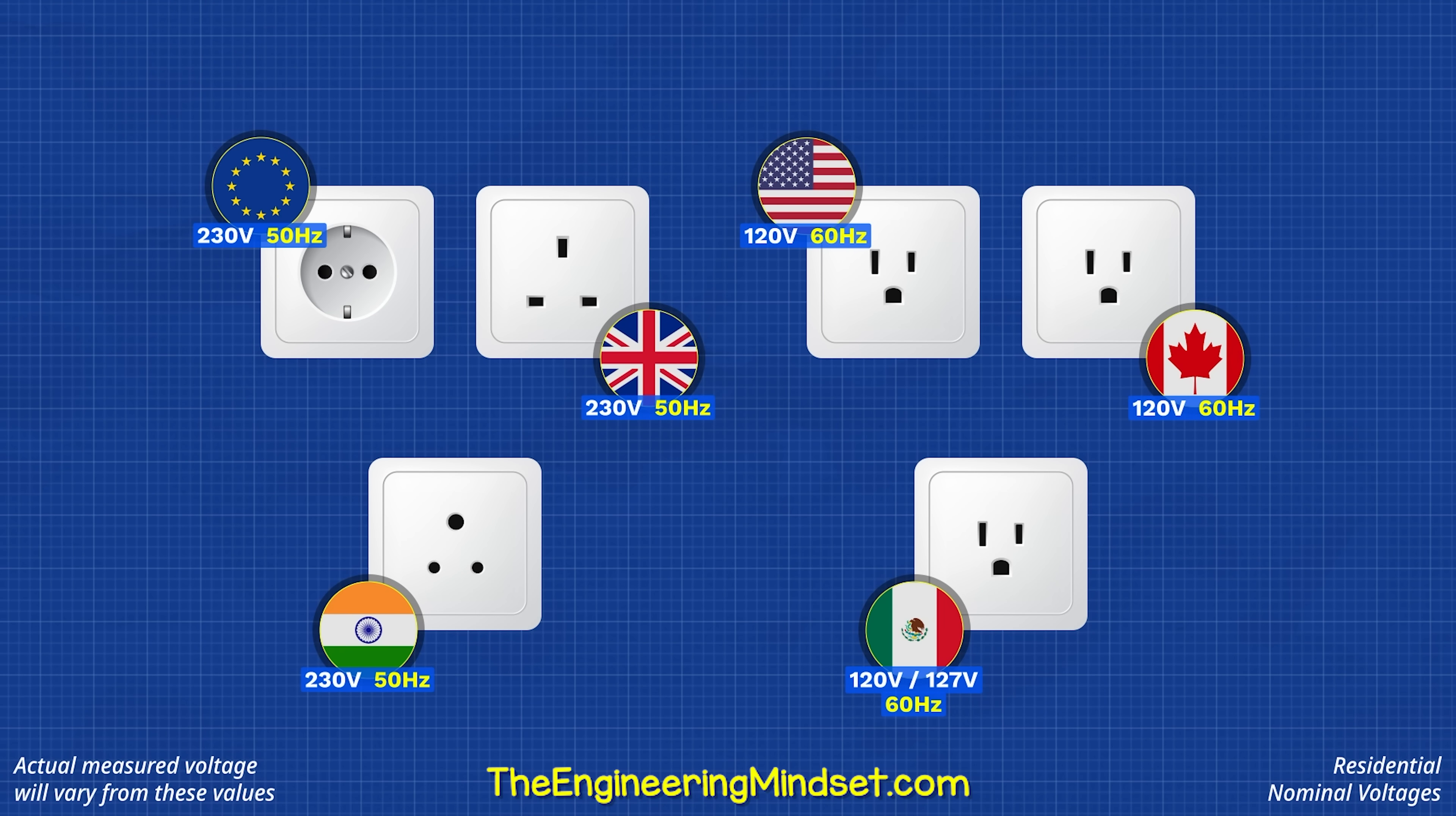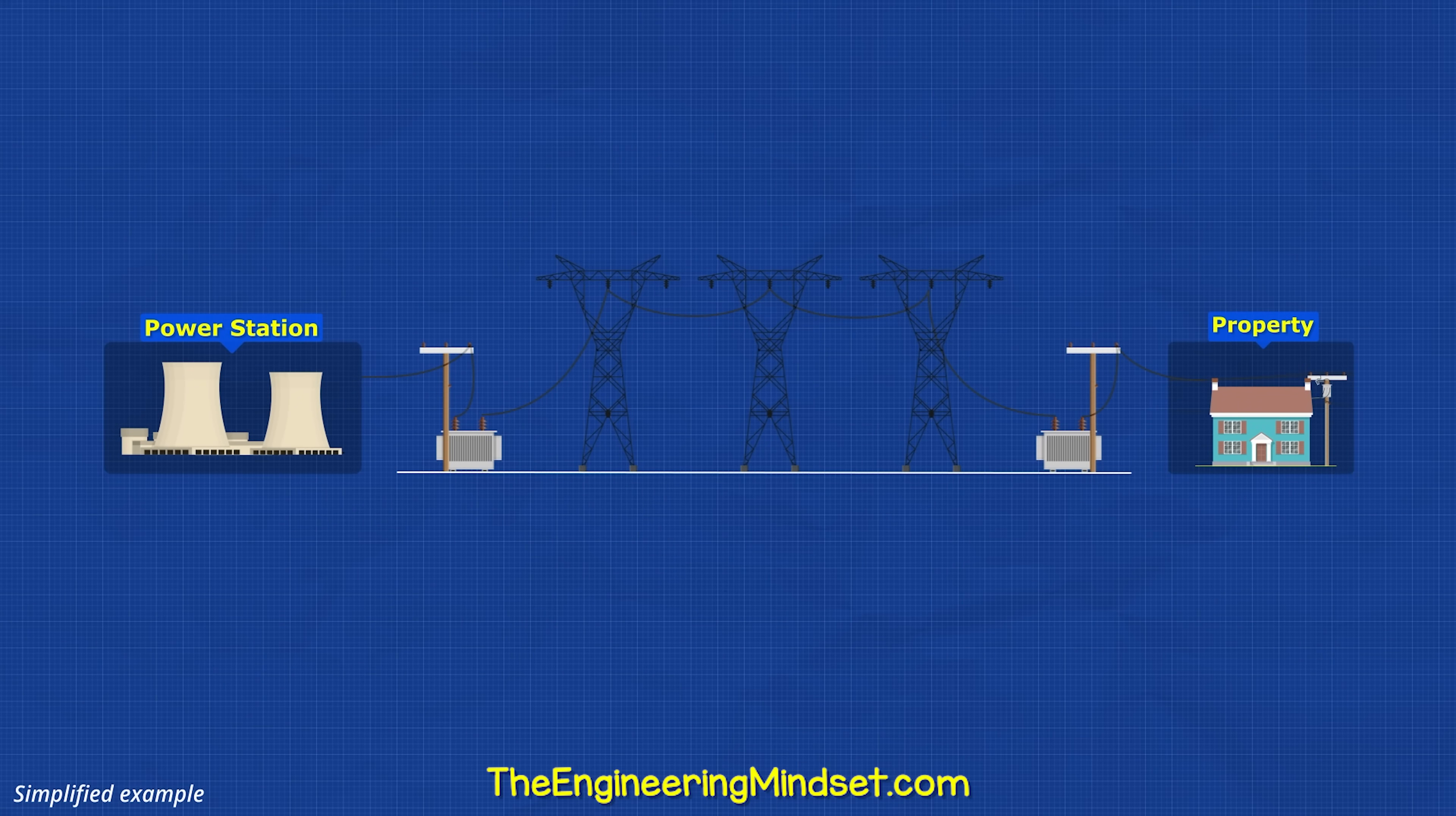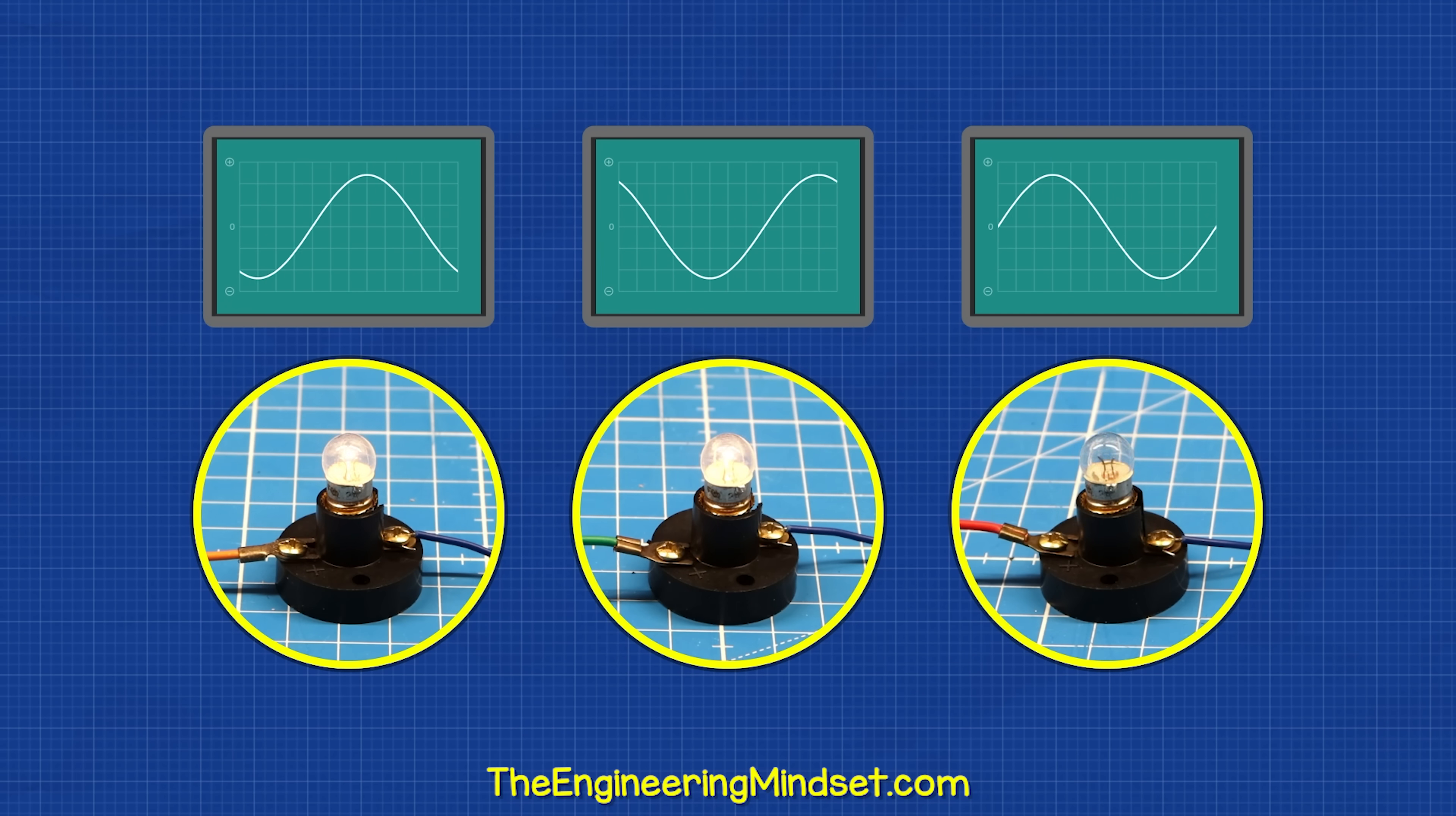Other countries use different voltages and frequencies. The AC power is produced by the electrical generator at the power station, which is some distance away. A generator converts mechanical energy into electrical energy. Typically, they will produce three-phase AC electricity, meaning it outputs three separate sine waves which all occur at slightly different times on three different wires.